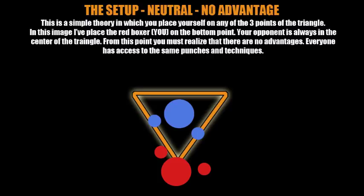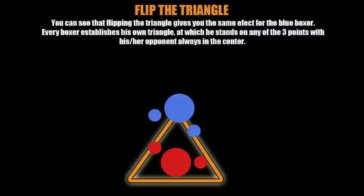When you look at this image, taking the point of reference of the red boxer, you place yourself on any of the three points of an equilateral triangle. Therefore, any point you stand on is the exact same thing, and your opponent is always located in the center of the triangle — in the middle. If you flip the triangle from the blue boxer's point of reference, you see the exact same thing: your opponent is always in the center, and you are always on any of the three points of the equilateral triangle.